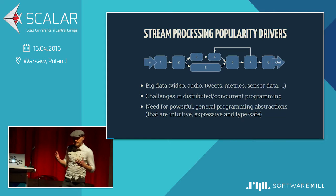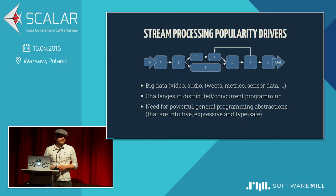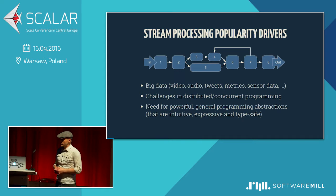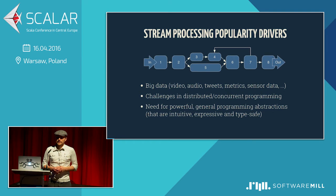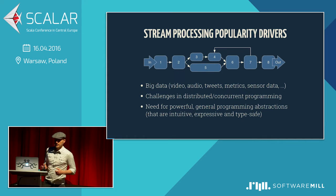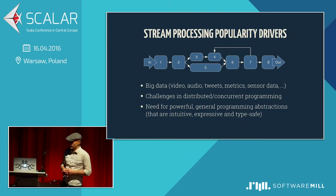Big data makes it necessary to deal with data in a streaming fashion. But there are also other more general challenges we see increasingly going forward — distribution and concurrency. All our systems usually run on several nodes nowadays if they're really large, or at least need to scale across maybe hundreds of cores, and that's hard. That's why we need eternally good and powerful general programming abstractions, and stream processing is just one of them, as we'll see.